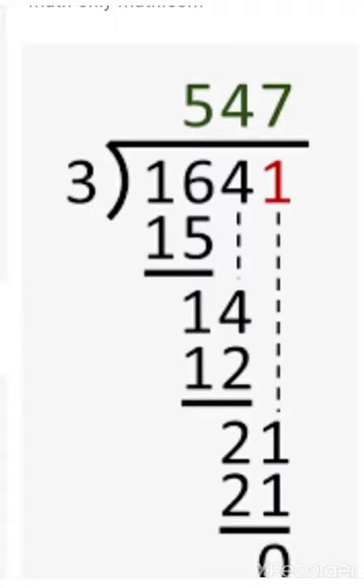And now you will subtract 15 from 16. You have got 1. Then 4 will be dropped down and it will be kept next to 1, means right side to 1.